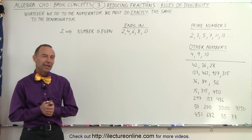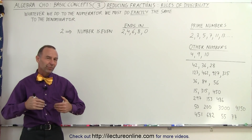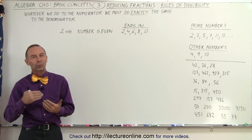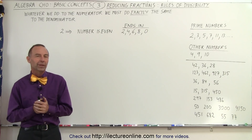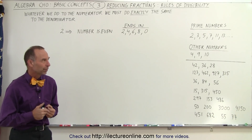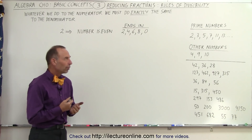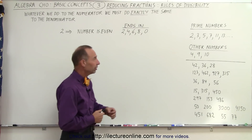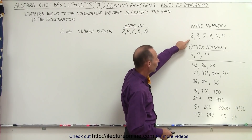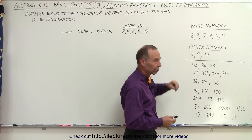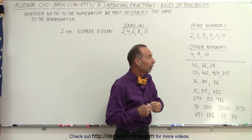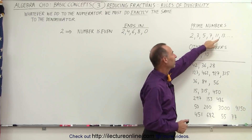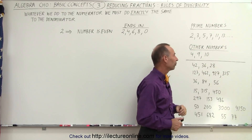Welcome to Electronline. In order to reduce fractions, we have to be familiar with the rules of divisibility — it really helps out. So first we need to understand what the prime numbers are. The prime numbers, at least the small ones, are the numbers that can only be divided by themselves and by the number 1: 2, 3, 5, 7, 11, 13, and so forth.